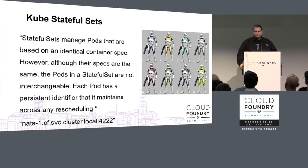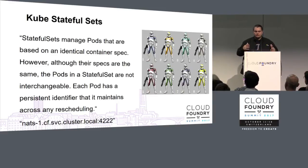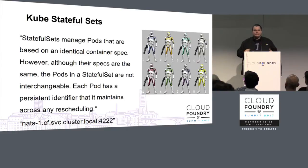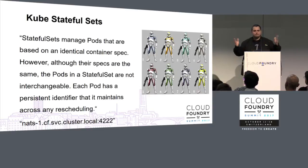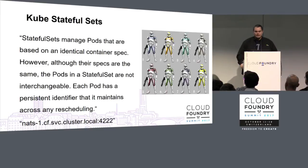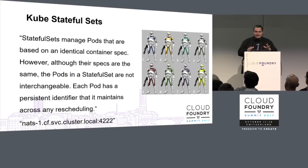Stateful sets are very important because they allow us to support clustered components like MariaDB. In a regular Kubernetes deployment, pod replicas have no real distinction — you can't tell one from the other, they get a random hostname when they start up, and you have no control over when they start. So if I want 20 routers, they'll all start up and be deployed across Kubernetes nodes in whatever order. With a stateful set, you actually get an index, so you can identify replicas by their index number.